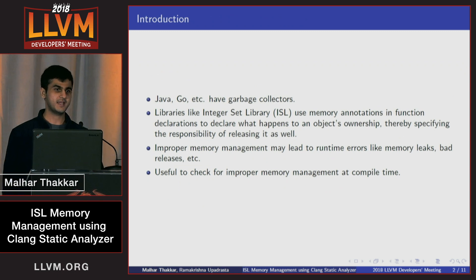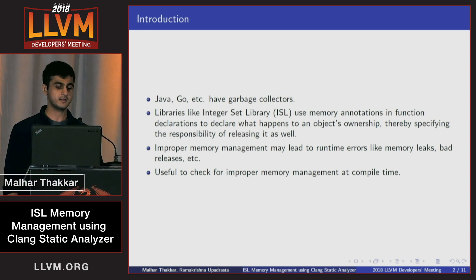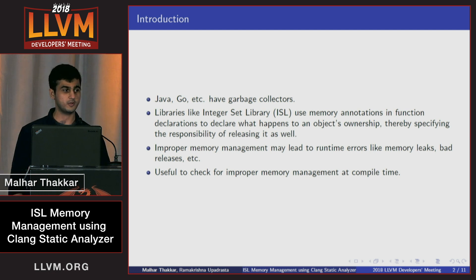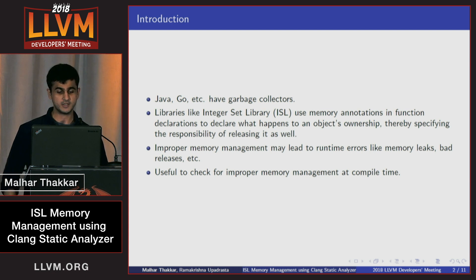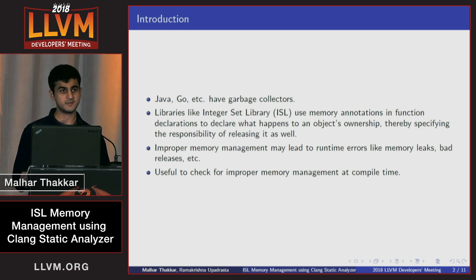A few languages like Java and Go have their own garbage collectors. And there are a few libraries like the integer set library ISL, which is used for polyhedral compilation, that use certain memory annotations in function declarations to give us information about what happens to an object's ownership, as well as specifying the responsibility as to who will release it.